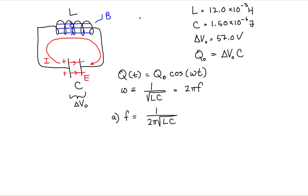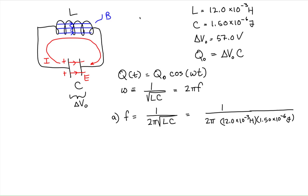For part A, the frequency is 1 over 2π times the square root of the inductance — 12.0 × 10⁻³ henries — times the capacitance — 1.50 × 10⁻⁶ farads — all under a square root. Plugging this into the calculator, we get 1.2 × 10³ with units of 1 over the square root of henry·farad.